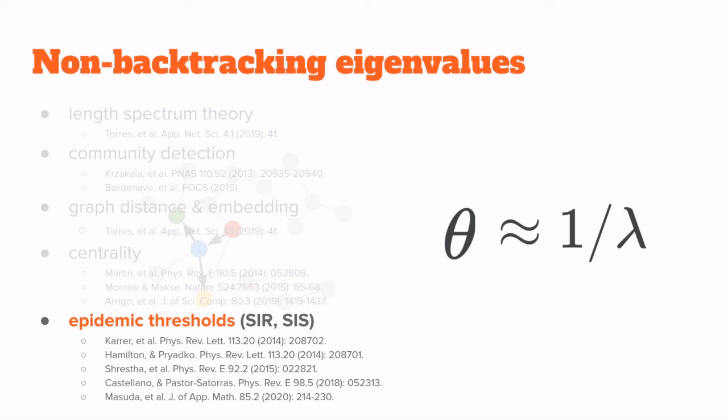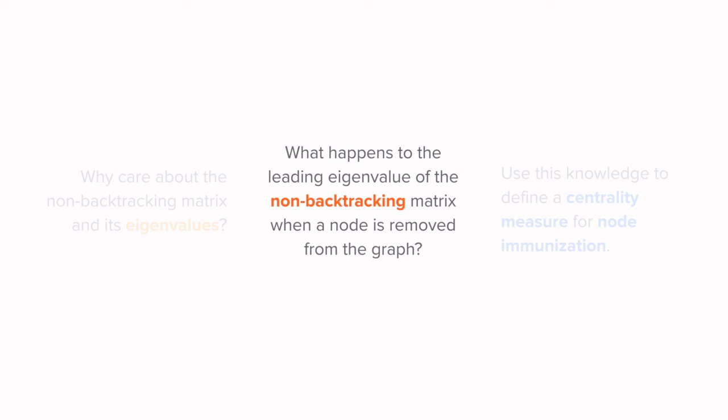Remember that the higher the threshold, the more difficult it is for a disease to become an epidemic. So we would like to make the threshold as high as possible, and thus the eigenvalue as small as possible. Which leads us directly to the main question that we're dealing with here. What happens to the eigenvalue, and thus to the epidemic threshold, when a node is removed from the graph? In general, the eigenvalue will decrease, but we want to quantify by how much so that we can choose which node to remove, if we're in a node removal or node immunization kind of setting.